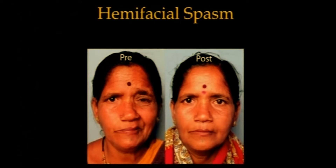HFS extends right up to the neck and is very easy to identify. If you see someone who has twitching around the eyelids, just look at the rest of the face. If it is only on one side, then that is hemifacial spasm.